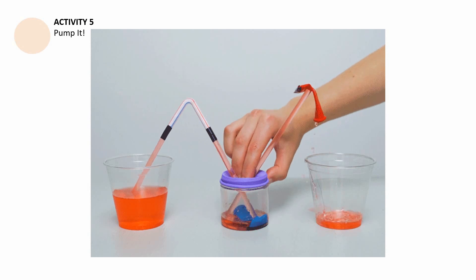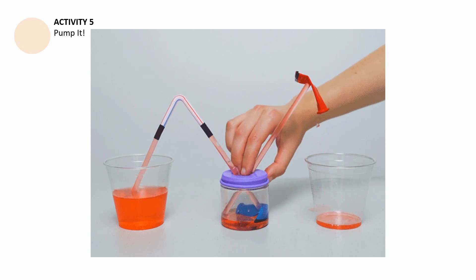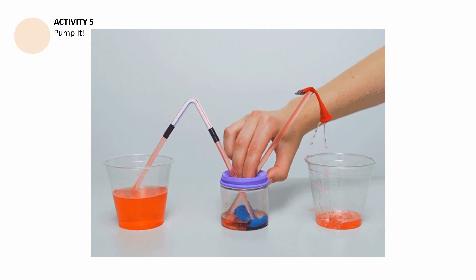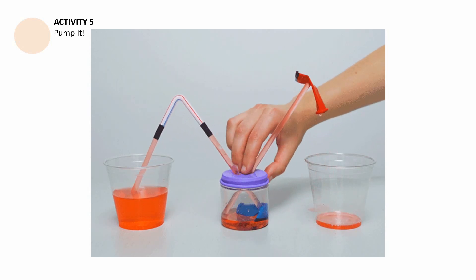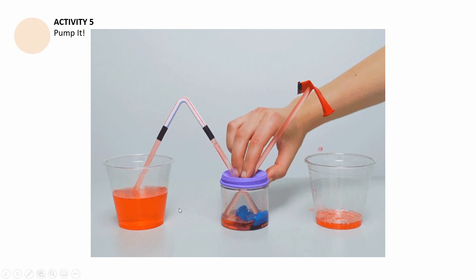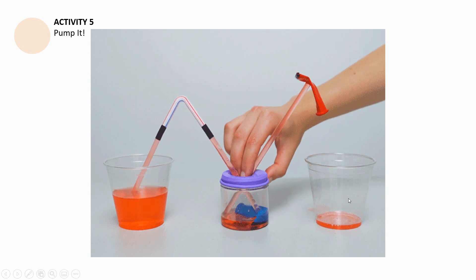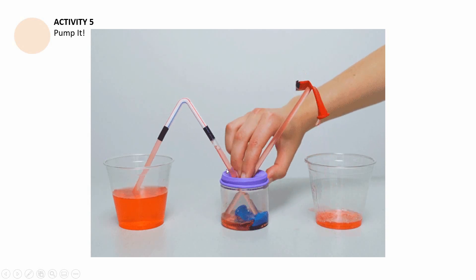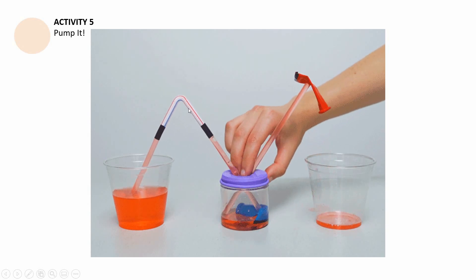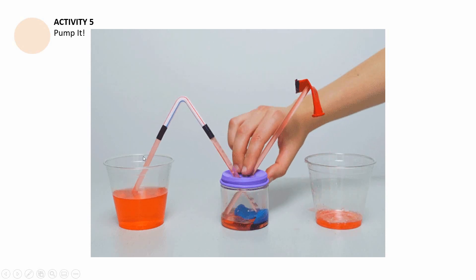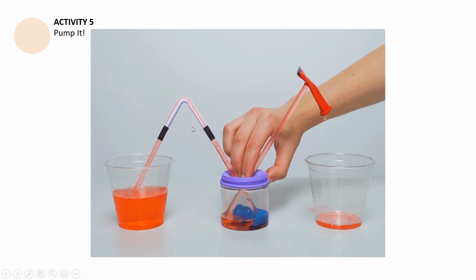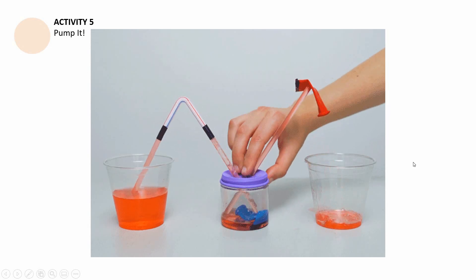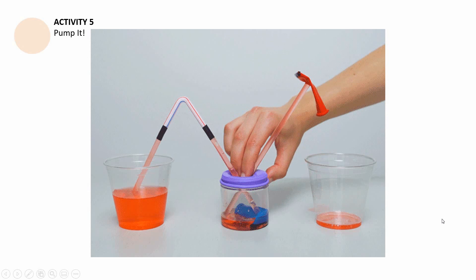This is what we're going to use in going through this activity. First, observe the following setup. There are two cups here, and then there is a bottle. Also, there are straws — one is clear and the other is opaque. Make those observations.